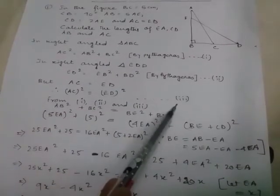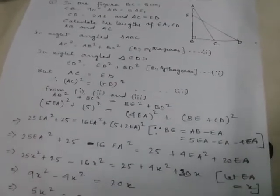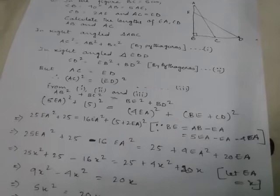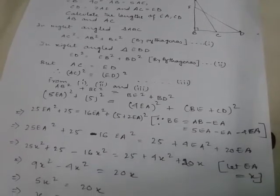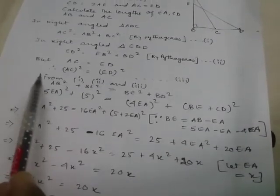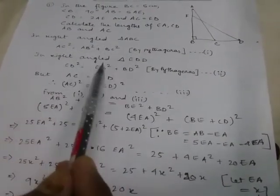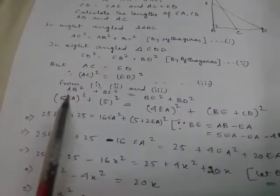Now, from equations 1, 2, and 3: 5EA² plus 5² equals AB² plus BC². AB² plus BC² equals EB² plus BD².